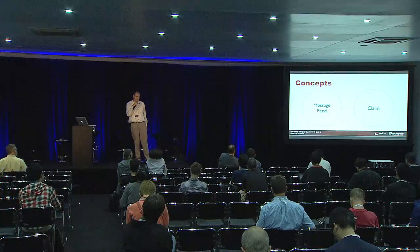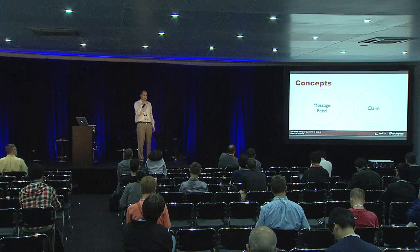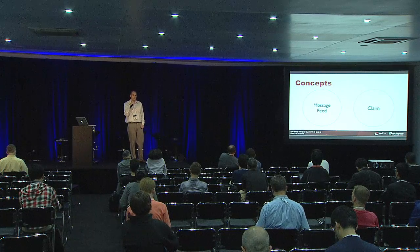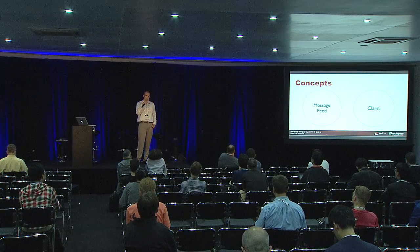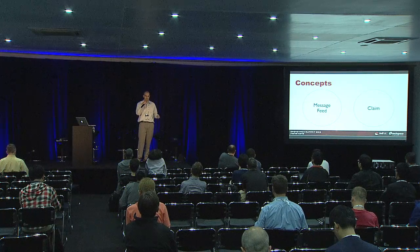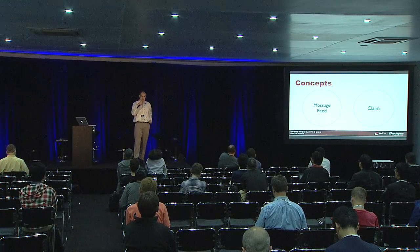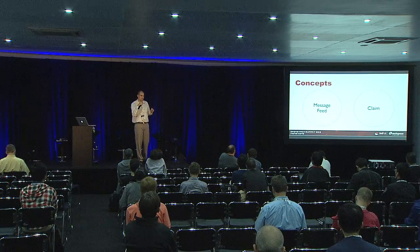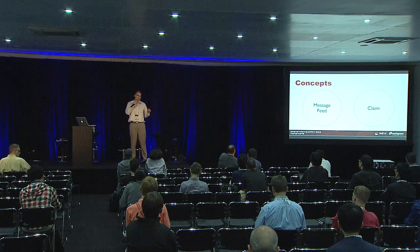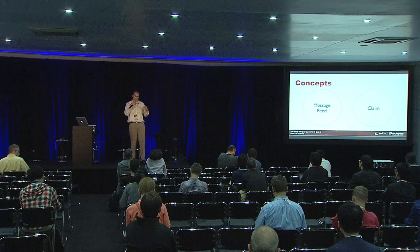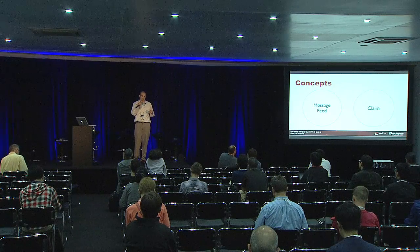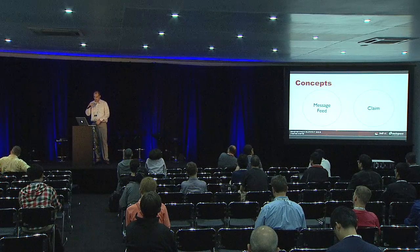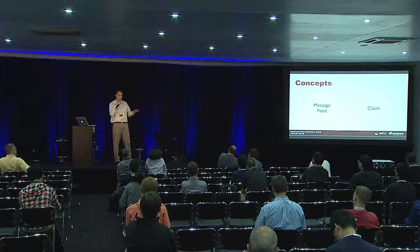First you have a message feed. You can think of this like an RSS or Atom feed where you can post messages, list them, and other people can see them as well — you're not hiding them from anyone. There's also the notion of a claim, where you can grab a batch of messages and they're yours. You would use this for job queuing where workers are processing things and you only want one worker at a time working on a single message. We've put both concepts in the same API, and that enables hybrid messaging patterns.